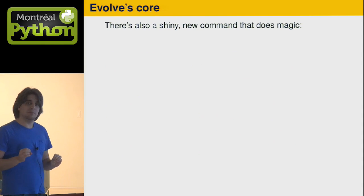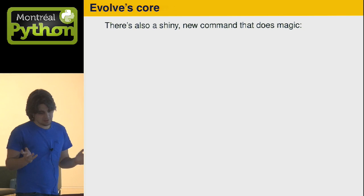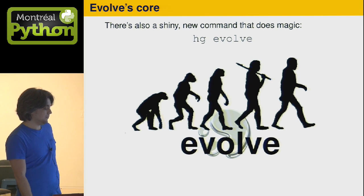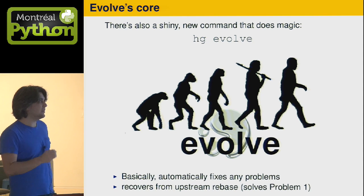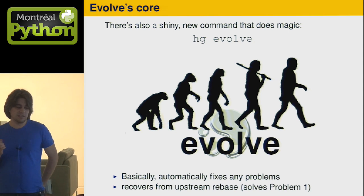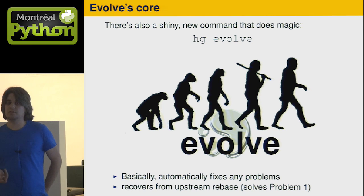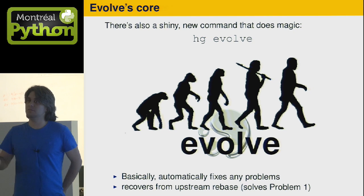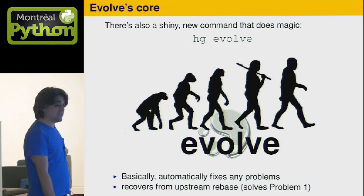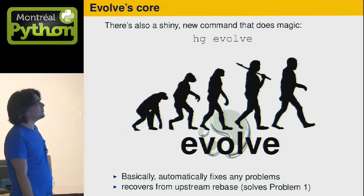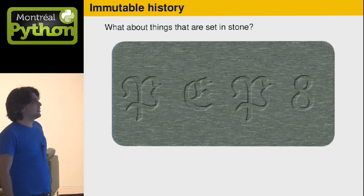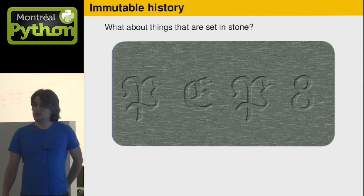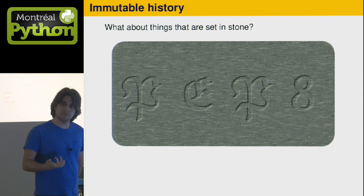There's also a shiny new command in hg evolve that does magic — it's called hg evolve. What this command does is it basically fixes any problems. If someone rebases underneath you, it actually knows where to go and puts you in the right location. This is what solves problem number one. Now, what about some things that are set in stone? How does evolve handle those problems?